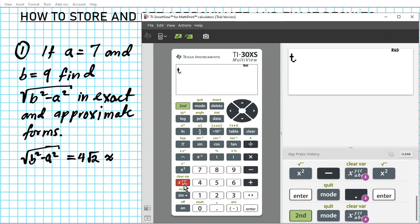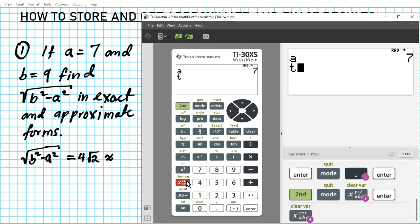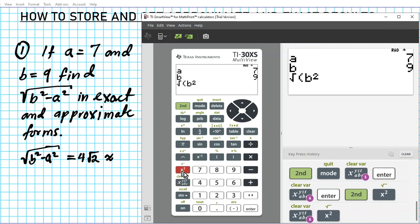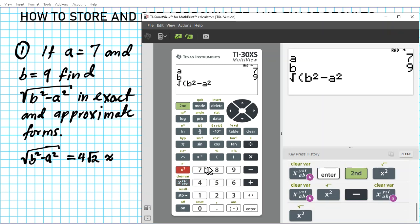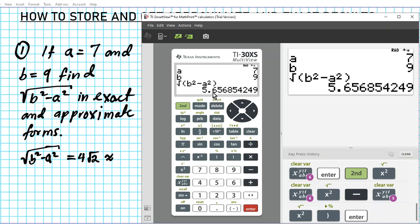Alright. So we already have A and B stored there. If you want to check, you can just call them up. If I call up A, press enter, this is seven. If I call up B, enter, this is nine. So if I do what I did before, again, the square root of B squared minus A squared, or you could just do four root two if you want to check. But I'm just going to do the whole thing again. B squared minus one, two, three, four, five, A squared. Press enter.